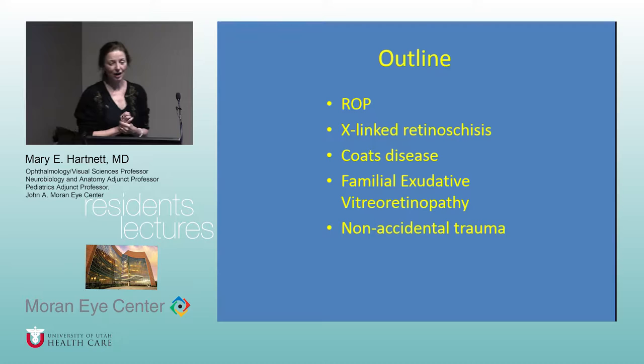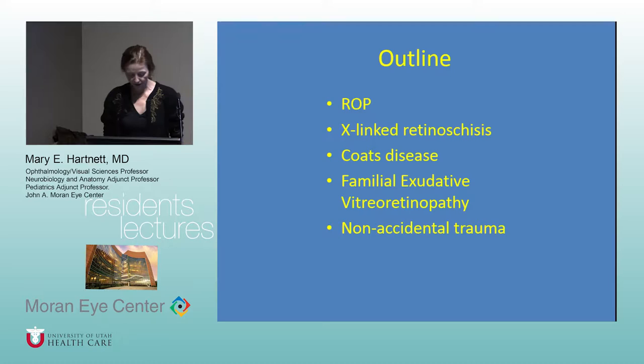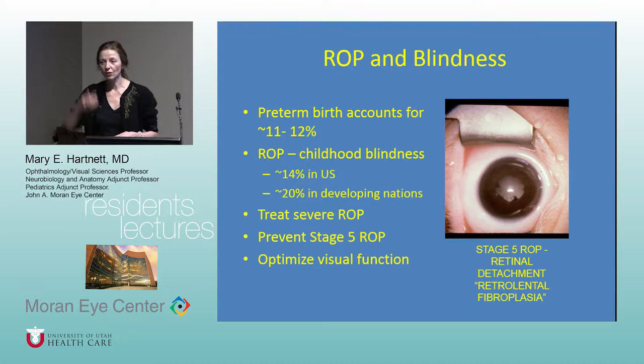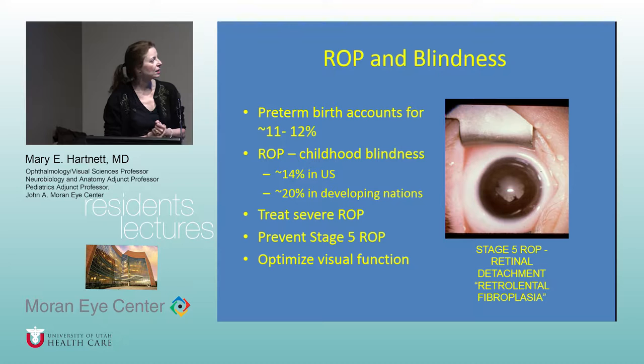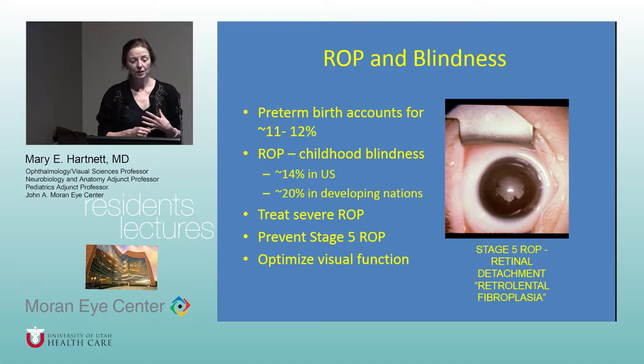I'm going to go through ROP, X-linked retinoschisis, and some other things in pediatric retina. Many of the conditions are really rare so we don't see them very often. The more common diseases are familial exudative vitreoretinopathy and a little bit on non-accidental trauma. I assume you get a lot on ROP through pediatric ophthalmology, so I'll go through this a bit quickly. ROP is constantly evolving as we're able to save ever smaller and younger premature infants.